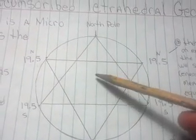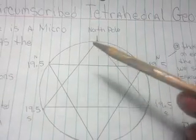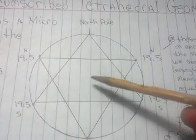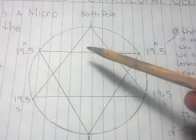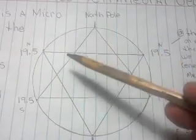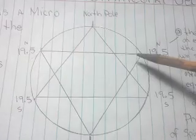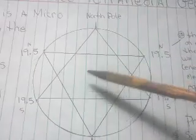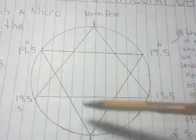Circumscribed tetrahedral geometry is when you place a three-dimensional tetrahedron and circumscribe it inside of a sphere. Why that's important is because that is exactly what we have going on on this planet right now.